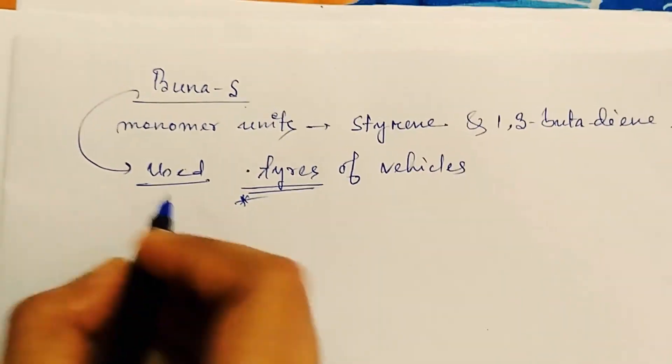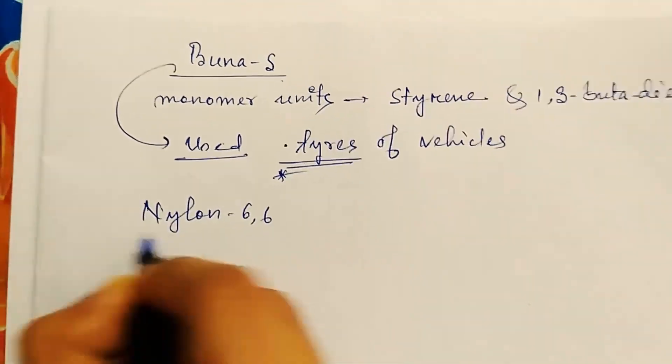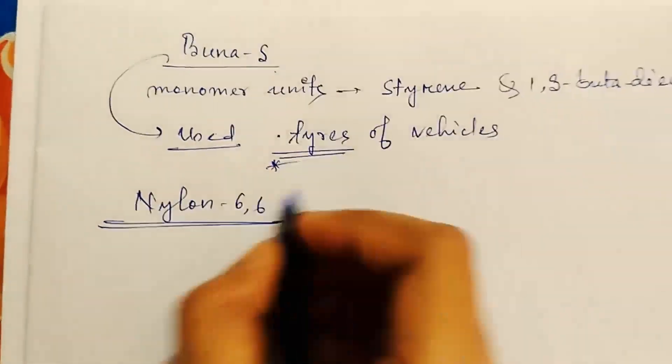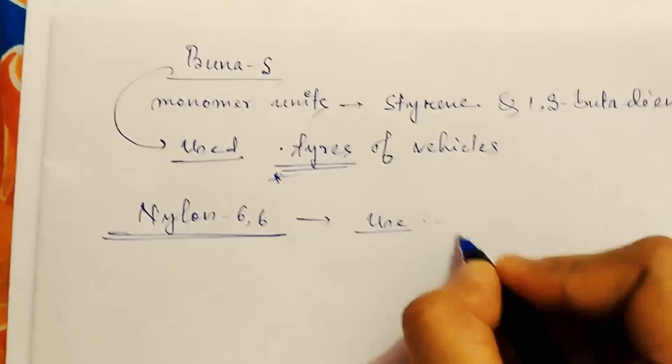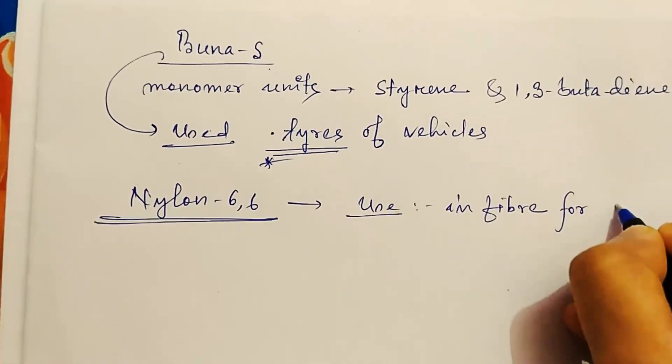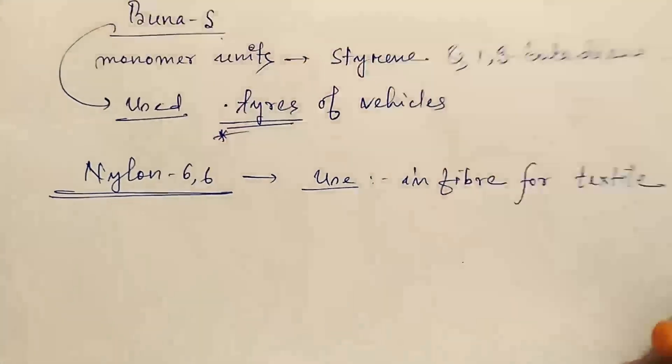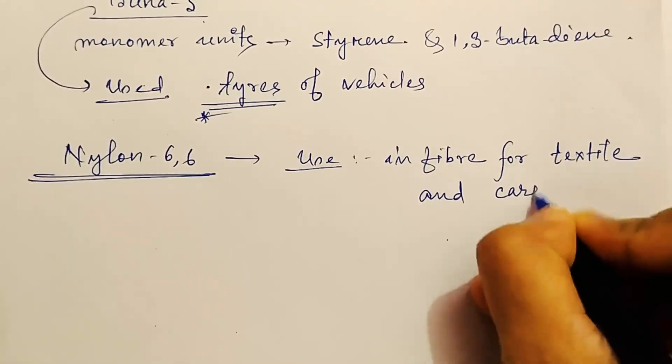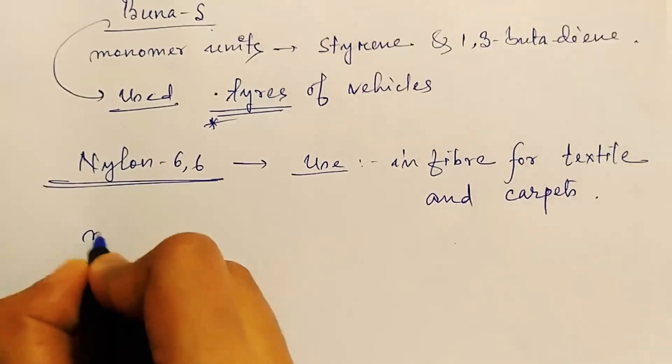Next come nylon 6,6. It is actually used in fiber for textile and carpets.